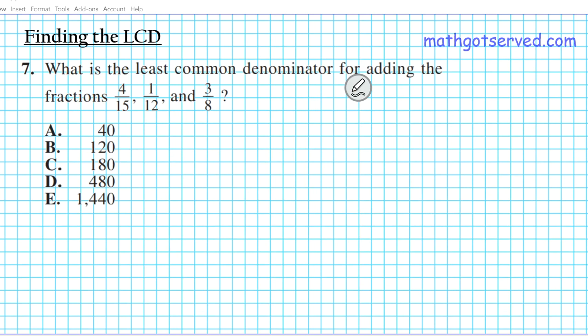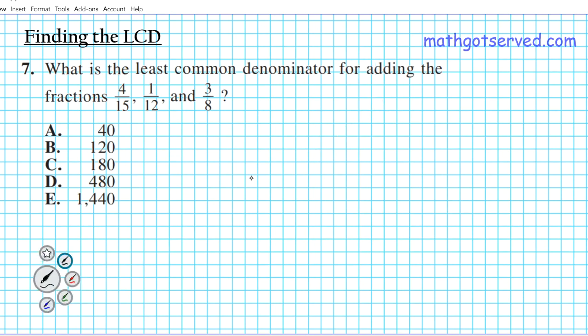Let's take a look at question number seven. You've been assessed on how to find the LCD of three numbers. Question seven reads: what is the least common denominator for adding the fractions four over 15, one over 12, and three over eight? I'm going to show you two methods to accomplish this goal, and whichever one you feel comfortable with, you can apply when you're taking your test.